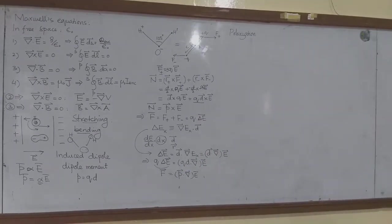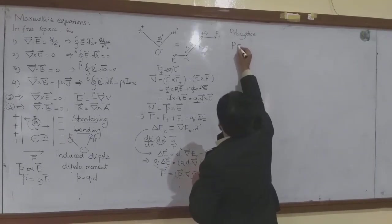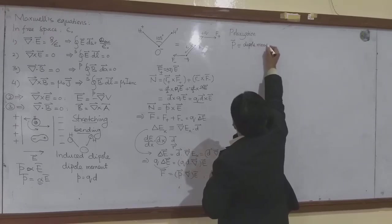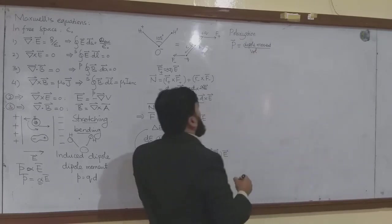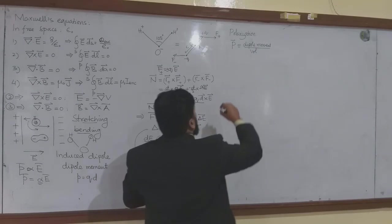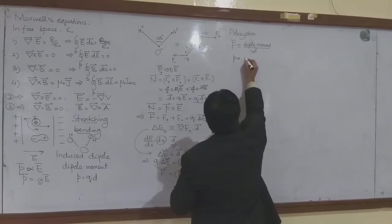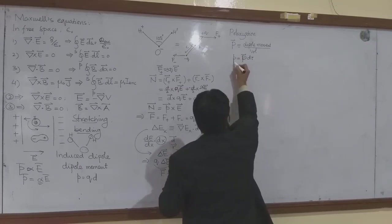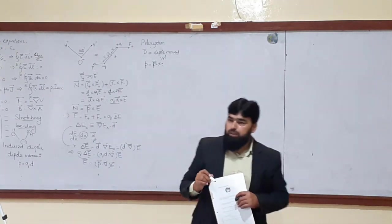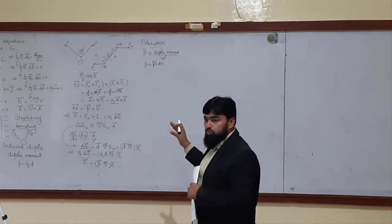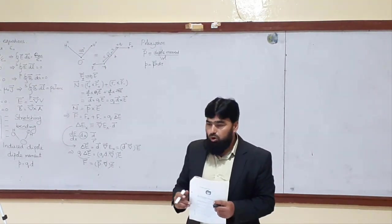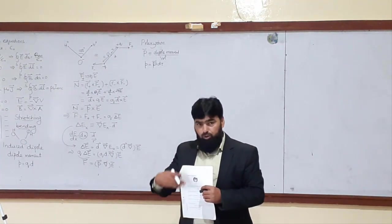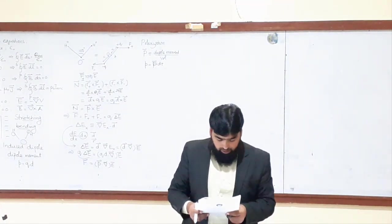If I define capital P — capital P is defined as the dipole moment per unit volume. If I multiply capital P by the volume element d-tau, it gives me the dipole moment. So small p is the dipole moment, while capital P is the dipole moment per unit volume. You can call capital P the dipole density, since it is per unit volume.